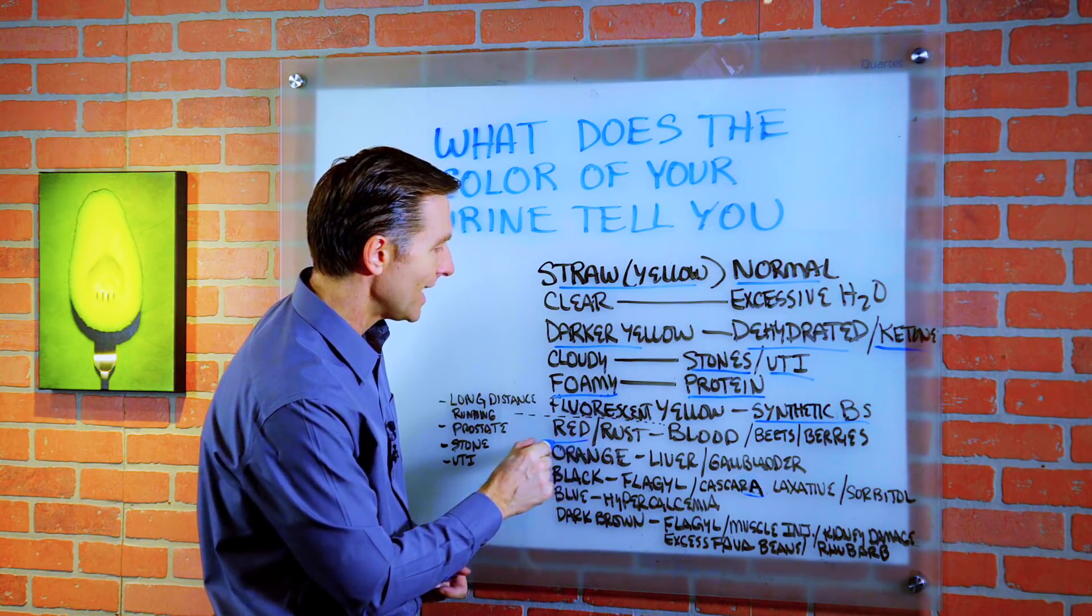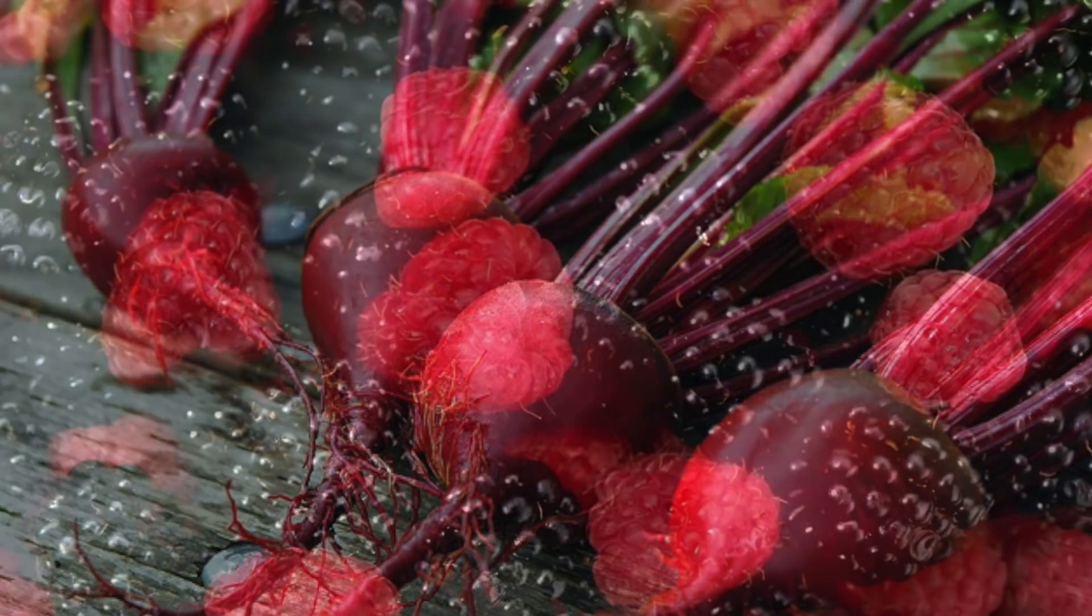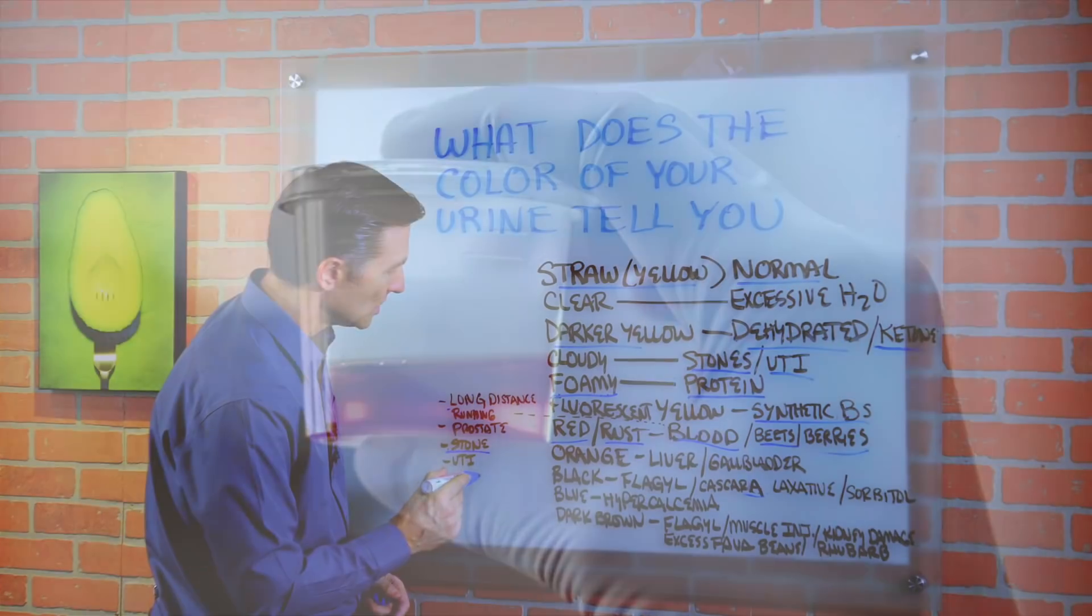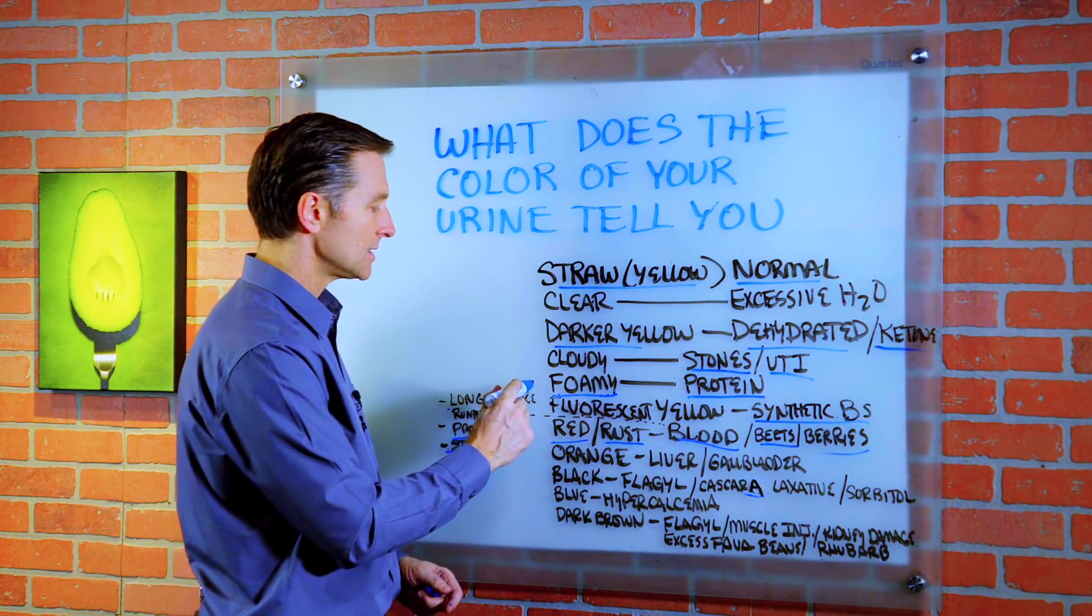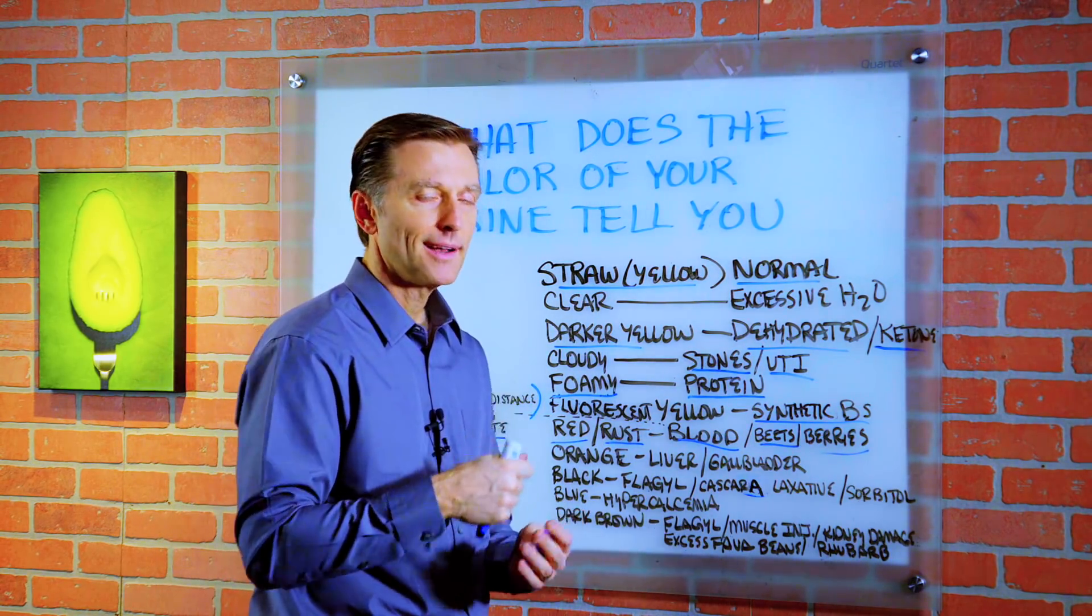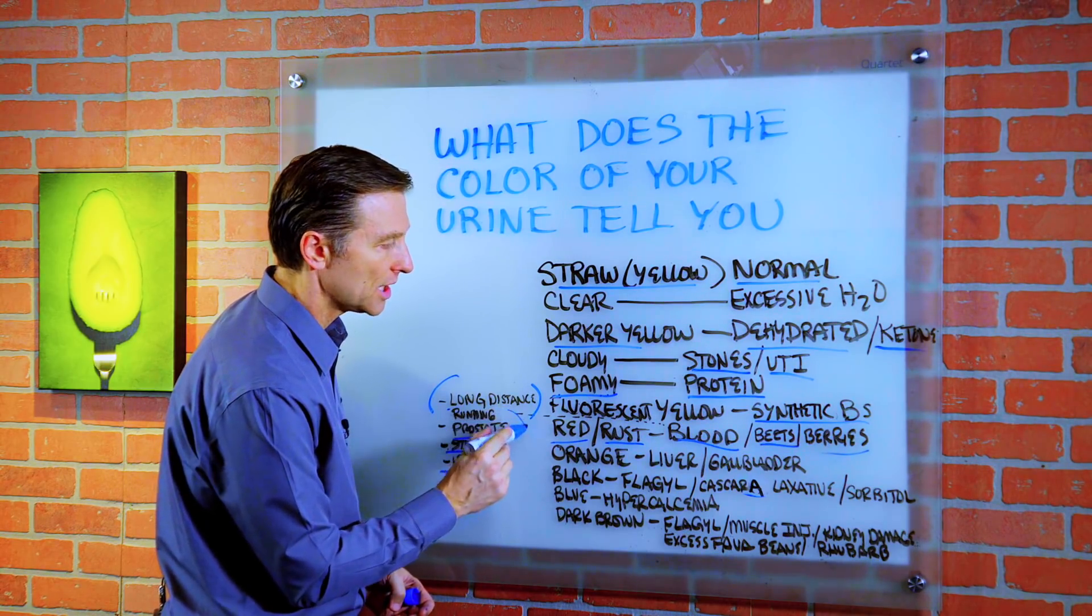If your urine is red or rust color, it could be blood, beets, or berries that you're consuming. If it's blood, it could mean that you have a kidney stone or UTI or a prostate problem, or let's say you just got done running a marathon. That could actually create some jarring, especially if you have a kidney stone, but even if you don't, it can produce some blood in the urine.